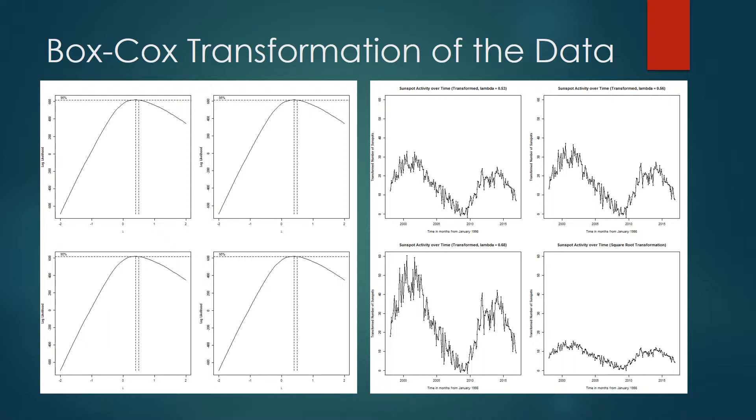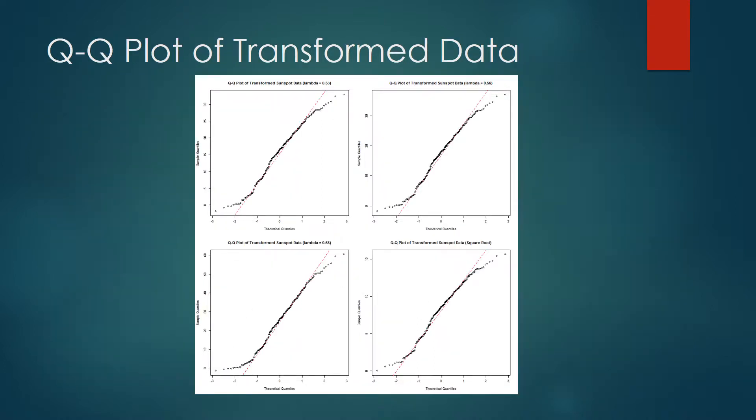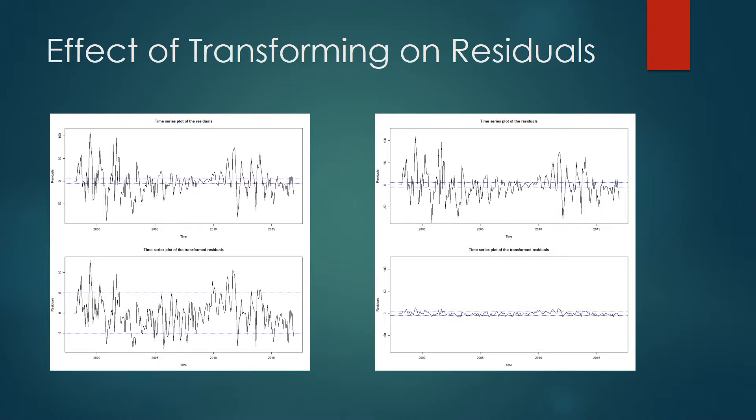On the right, we see the transformed data using the same scale on the y-axis. We can also consider a Q-Q plot of the transformed data for each value of lambda. A Q-Q plot should appear in an approximately straight line if the data is normally distributed. In each case, we see that there are still some issues of normality in both the upper and lower tails, and we need to be mindful of this. I have chosen to use a lambda value of 0.56.